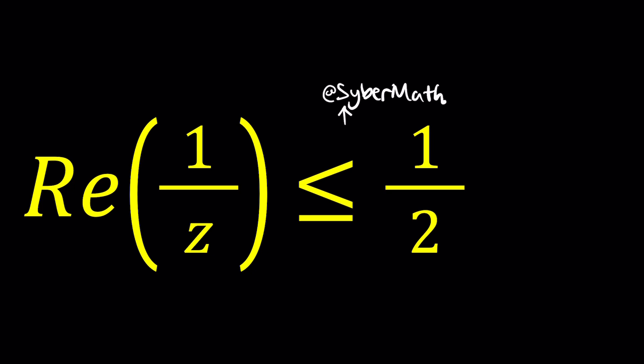Now we have a problem that we need to solve graphically. We're looking for a complex number whose real part of its reciprocal is less than or equal to one half. So the set of complex numbers that satisfy this inequality is going to lie on a curve. But when I say curve, it could also be a straight line, a line segment, and so forth. We're just going to call them in general curves. How do you find that? Just by solving for Z, but this is not an equation, it's an inequality.